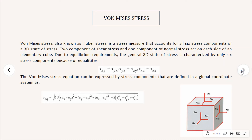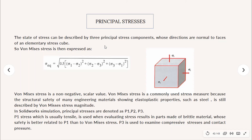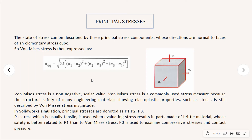The state of stress can also be described by three principal stress components whose directions are normal to the faces of an elementary stress cube, denoted as σ1, σ2, and σ3. Von Mises stress is a non-negative scalar value and is commonly used because the structural safety of many engineering materials with elastic-plastic properties, such as steel, is described by Von Mises stress magnitude. In SolidWorks Simulation, principal stresses are denoted as P1, P2, and P3. P1 — usually tensile — is used when evaluating stress in parts made of brittle material, while P3 is used to examine compressive stress and contact pressure.